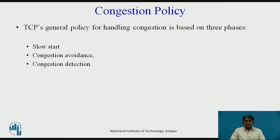TCP's general policy for handling congestion is based on three phases: slow start, congestion avoidance, and congestion detection. In the slow start phase, the sender starts with a slow rate of transmission but increases the rate rapidly to reach the threshold. When the threshold is reached, the rate of increase is reduced. Finally, if congestion is detected, the sender goes back to the slow start or congestion avoidance phase depending on how the congestion is detected.